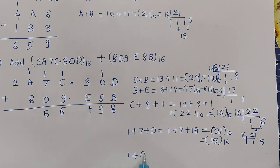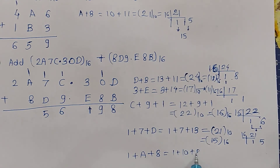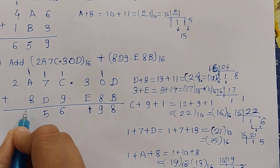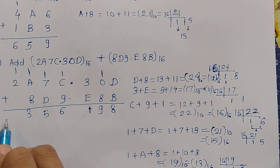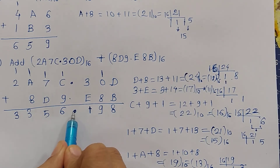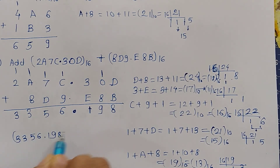Now 1 plus A plus 8: A is 10, so 1 plus 10 plus 8 is 19. We convert 19 decimal to hexadecimal: 16 goes once with 3 remaining. So the hexadecimal equivalent is 13. We write 3 and carry 1 to the next digit position. Then 1 plus 2 is 3. The final answer we got is 3356.198 hexadecimal.